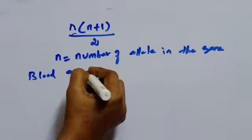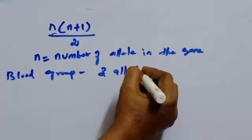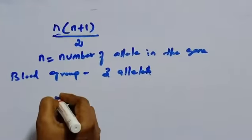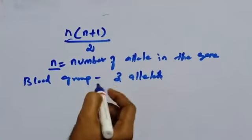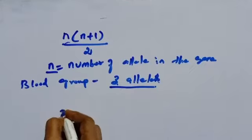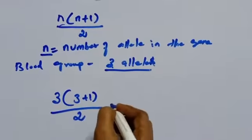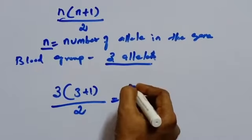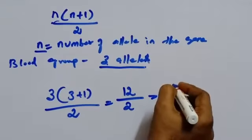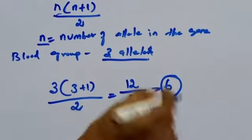How many alleles? Three alleles. Previously we have seen three alleles. So you can use this formula. What is N, number of alleles in the gene? Three. So 3 plus 1 divided by 2. 3 plus 1 is 4. 4 into 3 is 12. 12 by 2. How much? 6. So how many possible genotypes? Six possible genotypes.